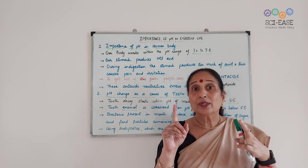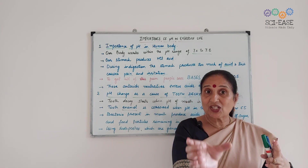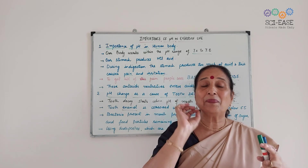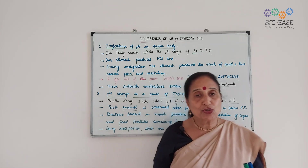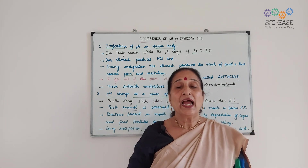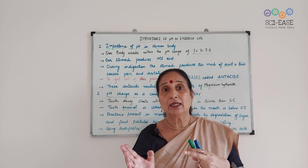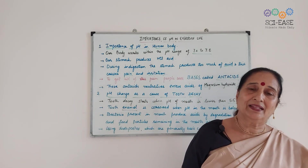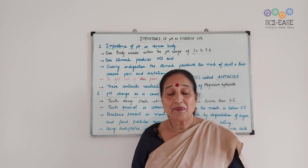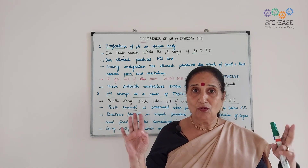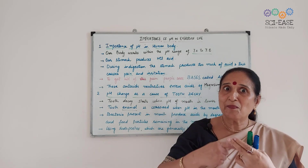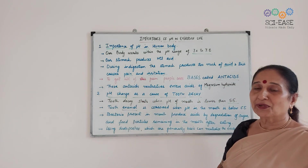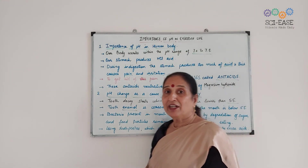From 0 to 6, the substances which have pH from 0 to 6, they are the acids. The substance which has a pH of 7 is neutral in nature. Water has a pH of 7, and the substances which have pH from 8 to 14 are the bases. What is the importance of pH in our day-to-day life? That is what we will study in this video. The topic is: importance of pH in everyday life.